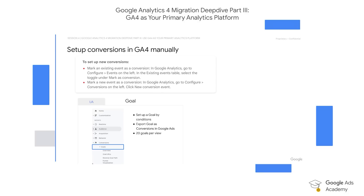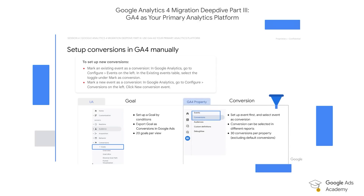For instance, if you were looking to set up a conversion action for whenever a user reaches a particular page, in Universal Analytics, you would set up a destination goal. In GA4, you would set up a page view event for when someone lands on that page and then set that page view event as a conversion. Once that is done, we can export our conversion events set up in GA4 to Google Ads in much the same way as we would export goal setup in Universal Analytics. The key takeaway is to ensure that we have the correct events configured in GA4, after which we can specify and select desired events as conversion actions to be exported over to Google Ads.